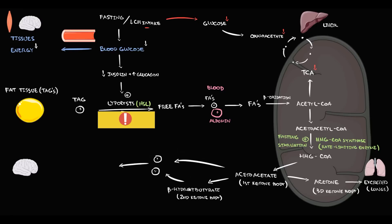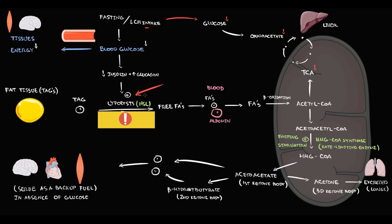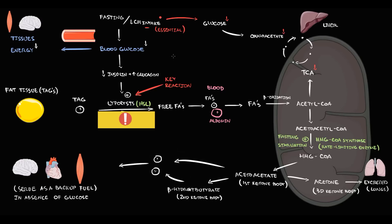Acetoacetate and beta-hydroxybutyrate are useful substances that travel to the brain, heart, and muscle tissues, where they serve as backup fuel in the absence of glucose. The key reaction in the ketogenic diet is activation of lipolysis by glucagon, because high glucagon levels allow us to break down fat tissue. However, this reaction is only possible if carbohydrate intake is extremely low.